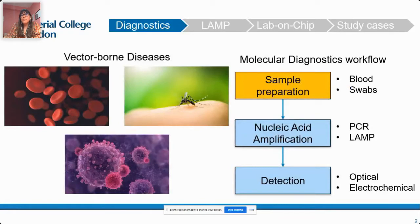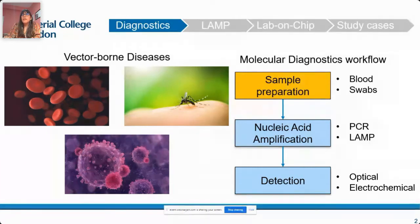Vector-borne diseases are one of the leading causes of morbidity and mortality, and one of the best examples are malaria and dengue. In addition to vector control strategies discussed by previous speakers, these diseases have highlighted the crucial role of diagnostics for control, identification, and to reduce their spread.